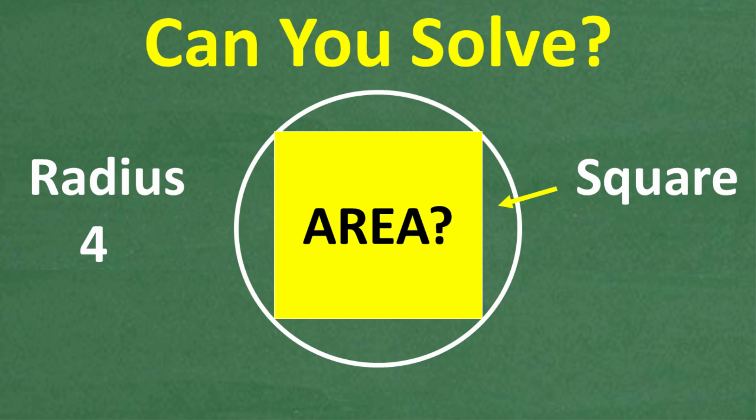The only information we have is that the radius of the circle is 4. So that is the question. Feel free to use a calculator, but if you can figure this out, go ahead and put your answer in the comment section. And of course, I'm going to solve this interesting geometry problem step by step.